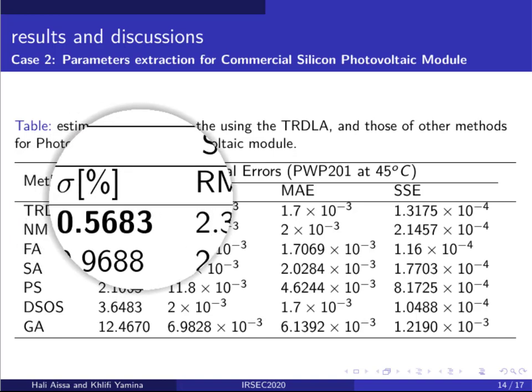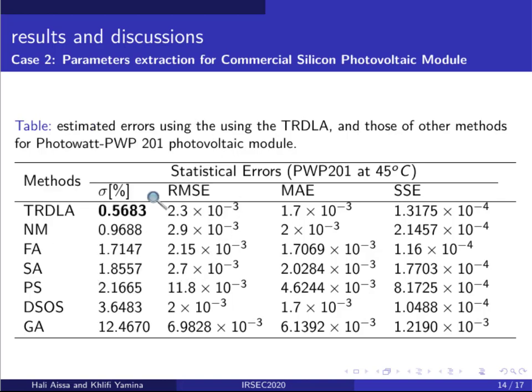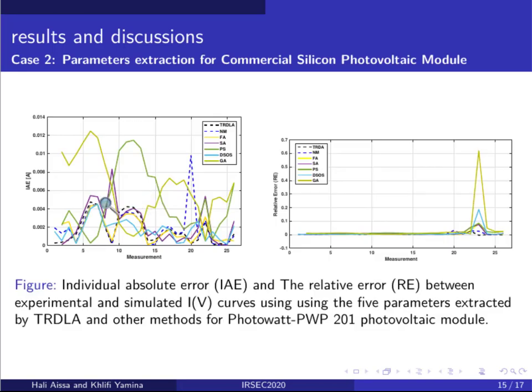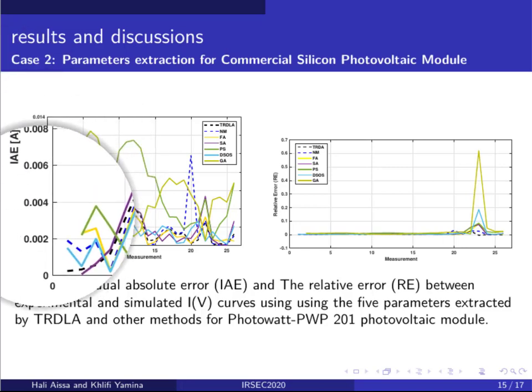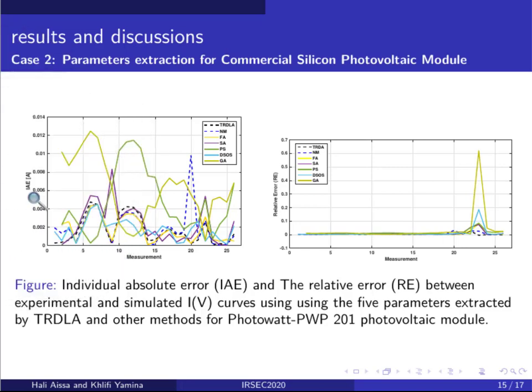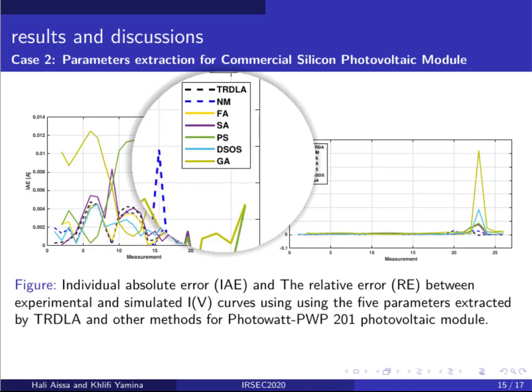The Trust Region Dogleg algorithm-based method provides the minimal value of standard deviation and the minimal value of relative error and individual error compared to recent and most accurate methods.